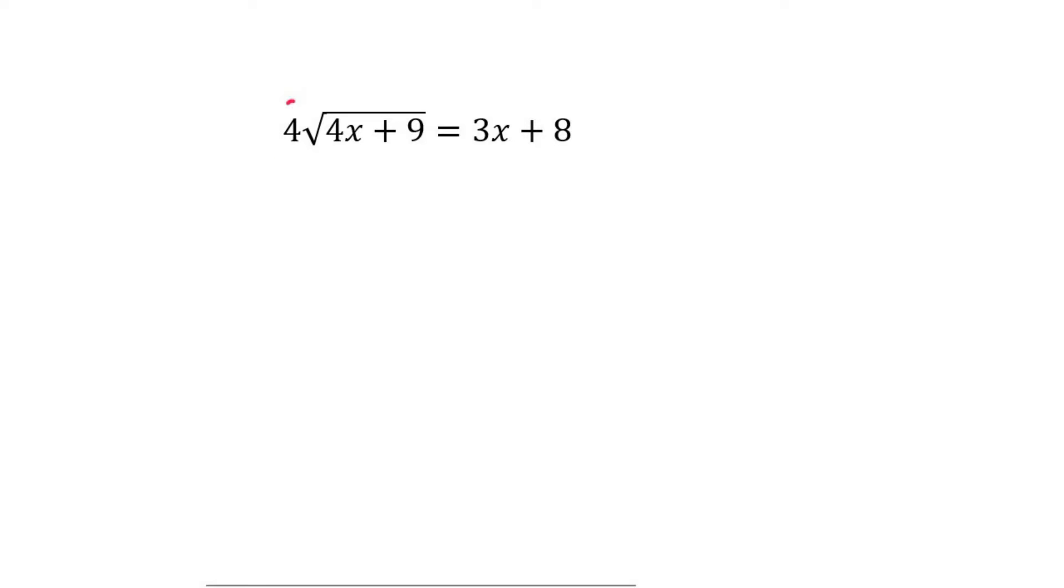So what you do to get rid of the square root is you square both sides of the equation. Remember in math you are allowed to do that as long as you're doing it to both sides.